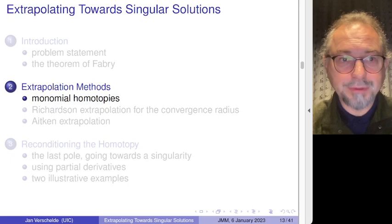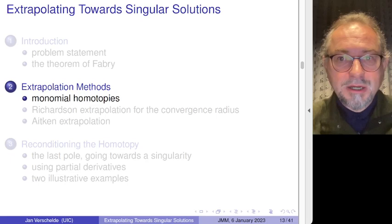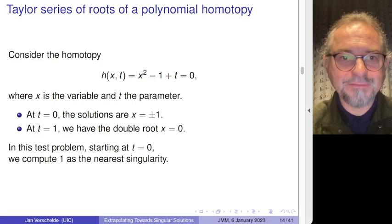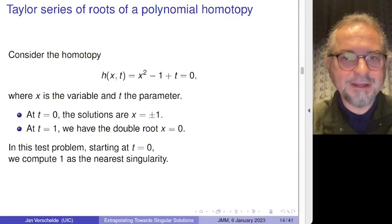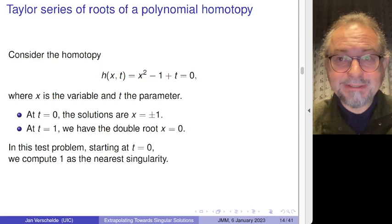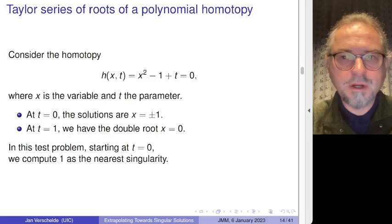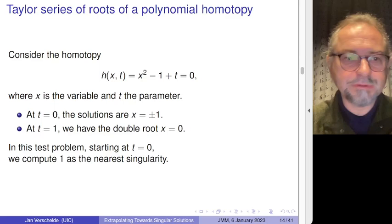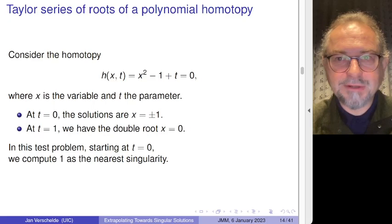I spent ample time on the first part — the problem. Let us now look at extrapolation methods. Choosing the examples is important, and I will restrict first to very basic examples of monomial homotopies. This is the simplest non-trivial example: the square root of 1 minus t. At t equals 0, we know the two solutions — 1 and negative 1 — so we will focus on one branch. At t equals 1, we have a double root. If we can't solve this problem, then what can we solve? This is a bottom-up approach: we start to apply our extrapolation methods to the square root of 1 minus t.